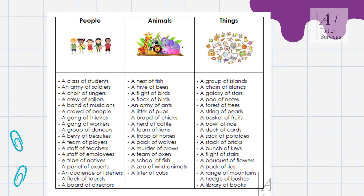A galaxy of stars. A pot of notes. A forest of trees. A string of pearls. A basket of fruits. A bowl of rice. A deck of cards. A sack of potatoes. A stack of bricks. A bunch of keys. A flight of stairs. A bouquet of flowers. A pack of lice. A range of mountains. A hedge of bushes. A library of books.